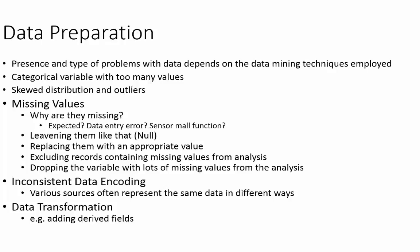Another thing to look for during data preparation is inconsistent data encoding. You have to ensure that data descriptions match across different sources, since various sources often represent the same data in different ways — for example, 'last name,' 'surname,' or 'family name.' Finally, you may need to perform data transformation such as adding derived fields or grouping classes of categorical variables.